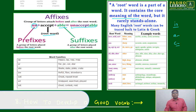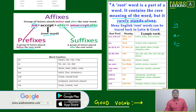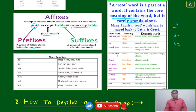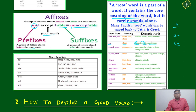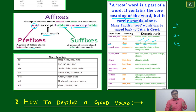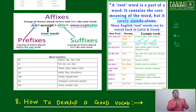A root word is a part of a word — it contains the core meaning but rarely stands alone. We have to give some help to the root word, then it gives different meanings. For example, the root 'ac' or 'acu' means sharp: accurate means precise with very little deviation, acute is a very sharp angle, and acupuncture means puncturing at a very specific sharp point using needle-type instruments.